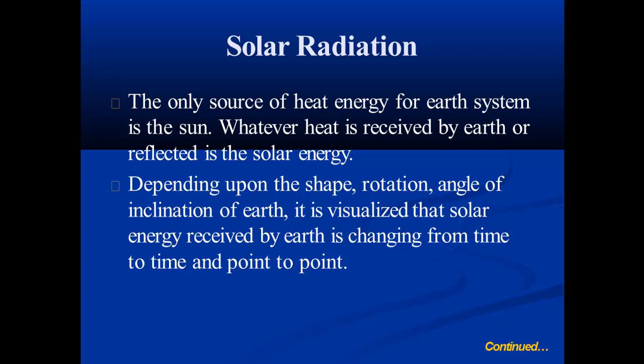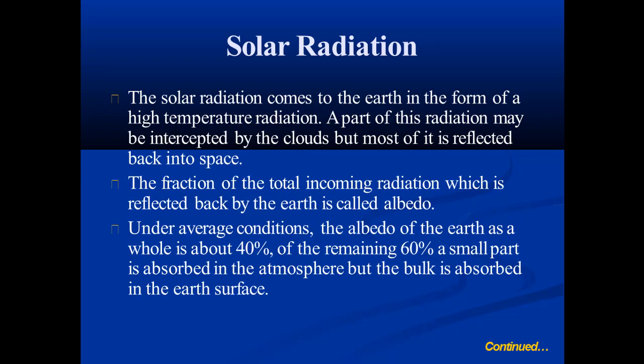Depending upon the shape, rotation, and angle of inclination of the earth, it is visualized that solar energy received by earth is changing from time to time and from point to point. The solar radiations that come to the earth's surface are in the form of short-wave radiation. The fraction of the total incoming radiation which is reflected back by the earth is called the albedo.